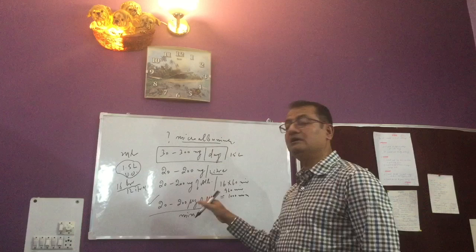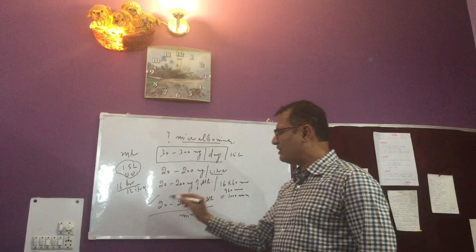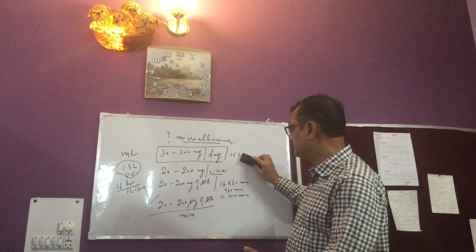20 to 200 micrograms of albumin per minute. If the patient is having this much albuminuria, we'll be defining it as microalbuminuria. So again, this is not something practical in clinical practice.